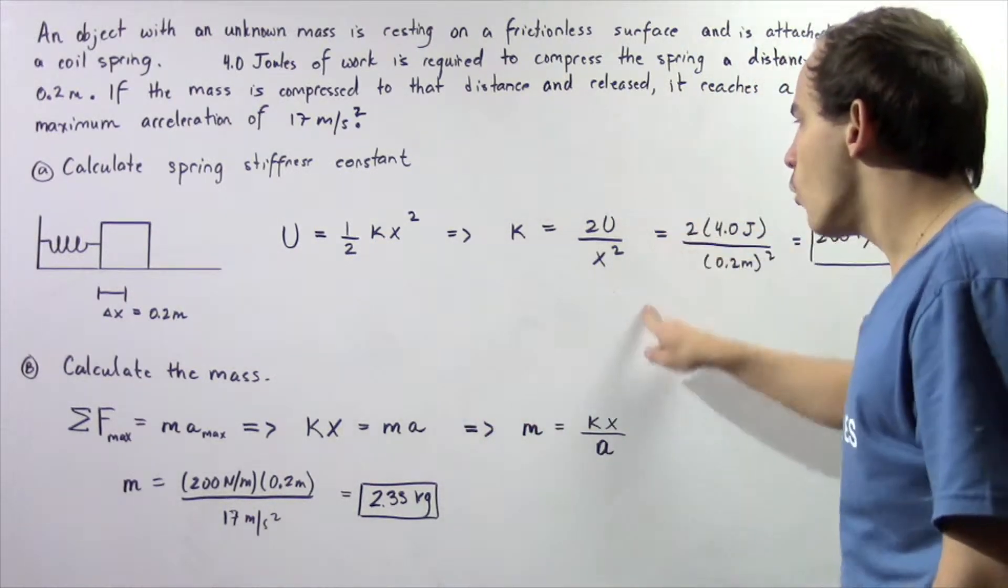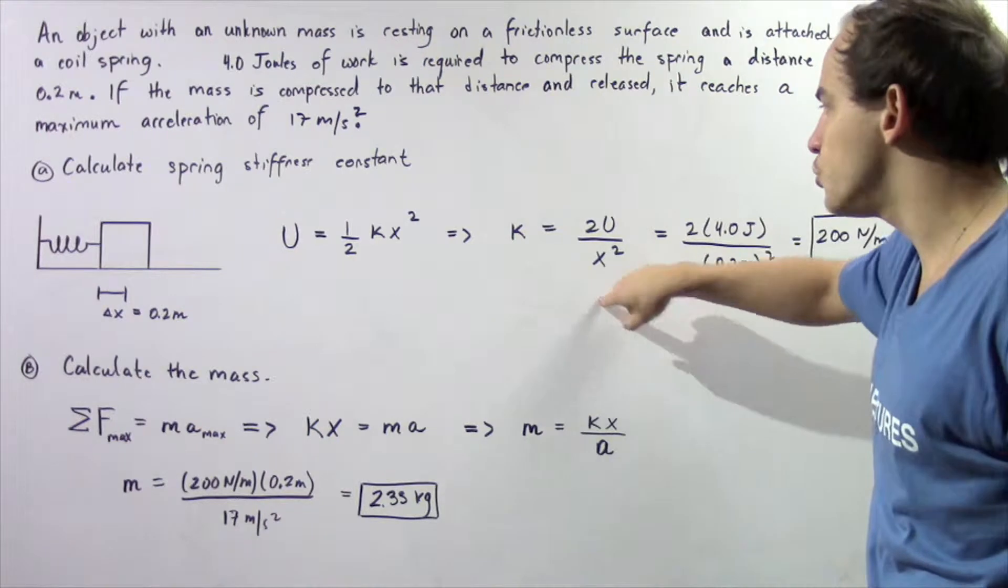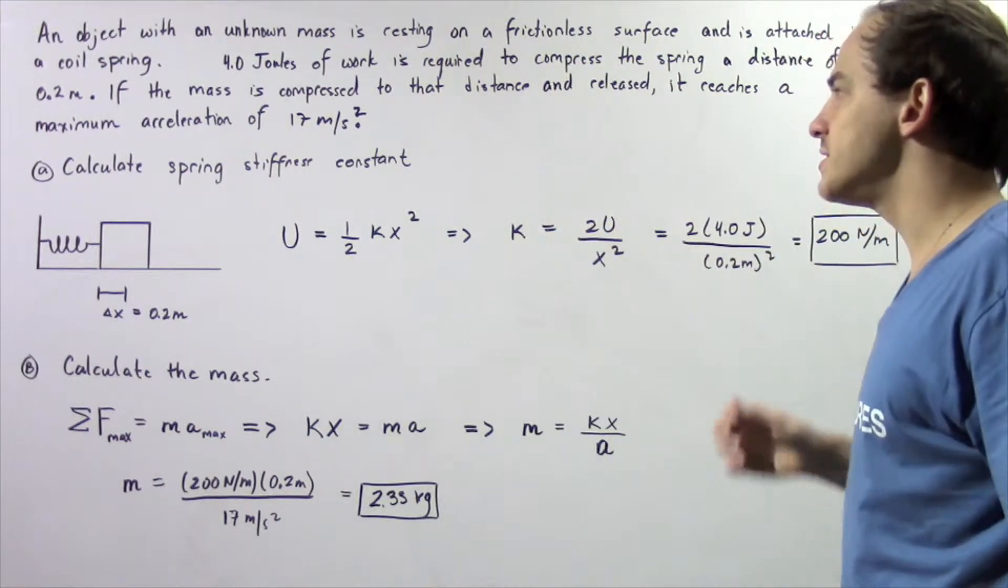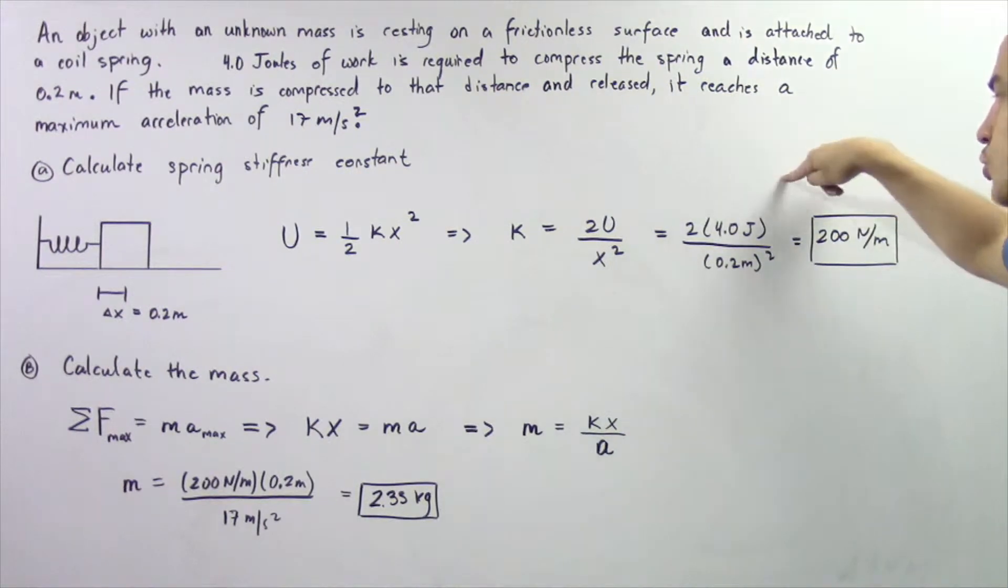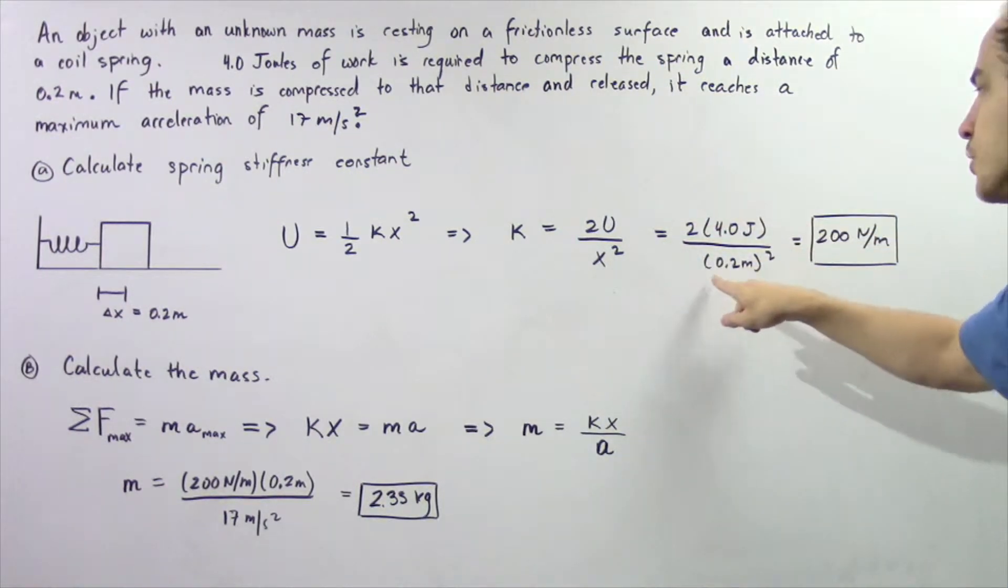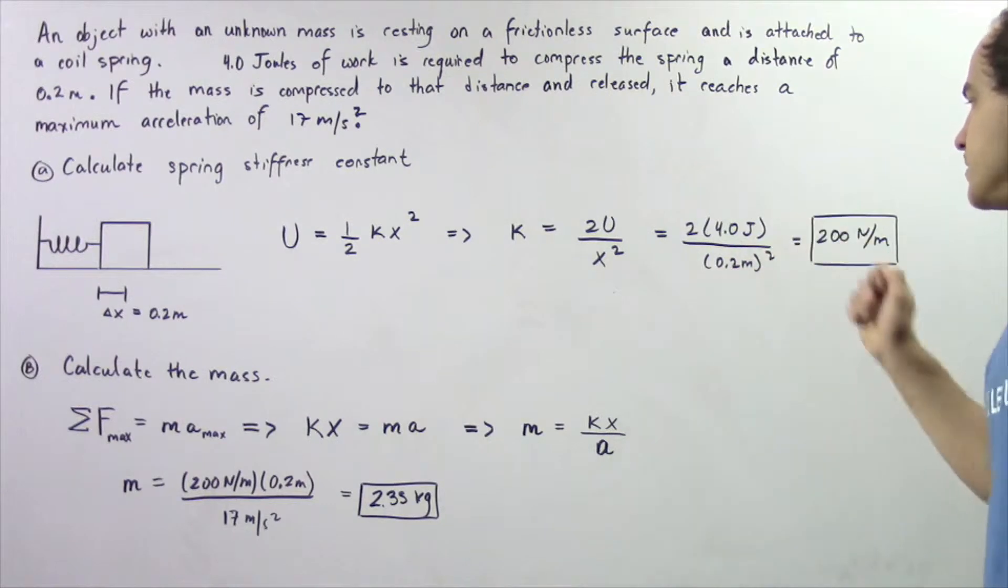we can now plug in our values to solve for our spring stiffness constant. So, 2 multiplied by 4 joules divided by 0.2 meters squared gives us a spring stiffness constant of 200 newtons per meter.